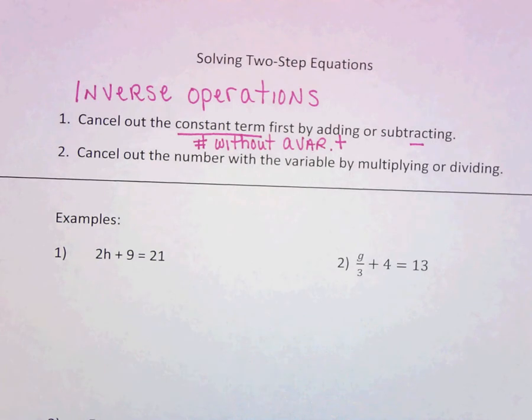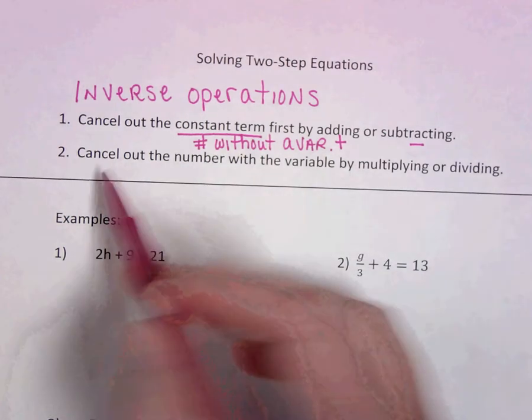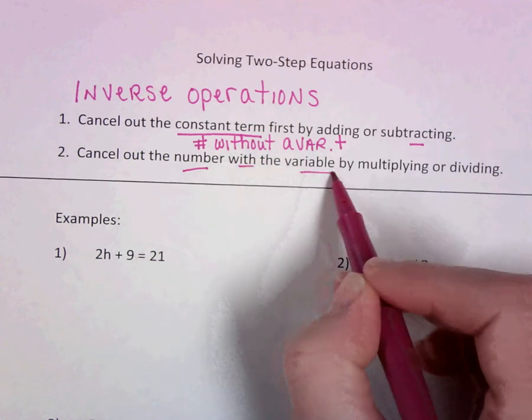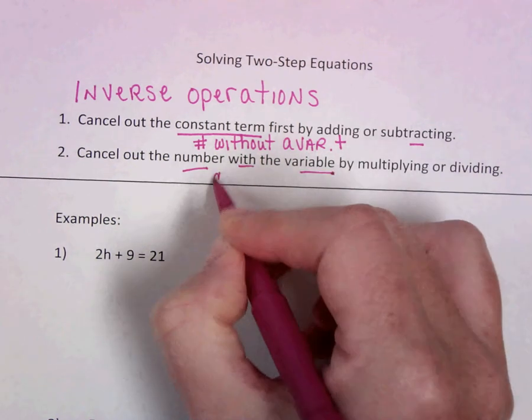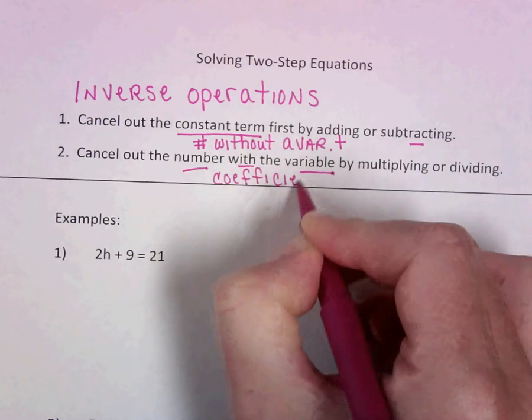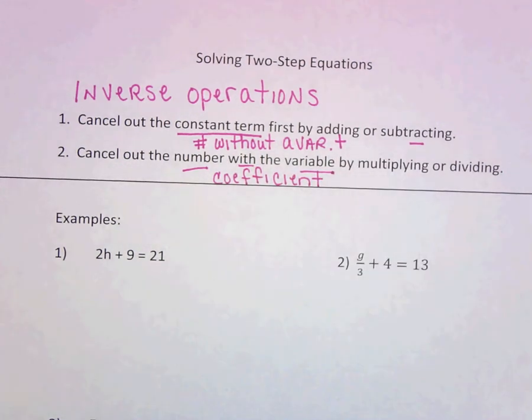And then the second thing we're going to do is we're going to cancel out the number that's with the variable. We call that the coefficient, and we're going to do that by either multiplying or dividing.